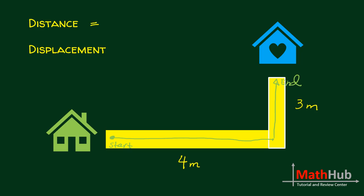Your distance traveled will be equal to 4 meters plus 3 meters. So therefore, that is 7 meters. Again, where did the distance come from? Here, because you walked 4 meters and then you walked another 3 meters to reach your destination. So therefore, your distance is 4 meters plus 3 meters, so that's 7 meters.